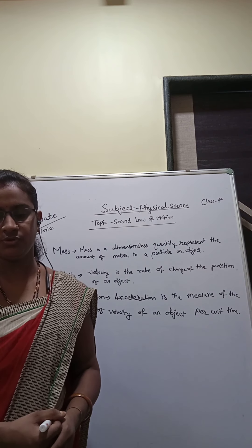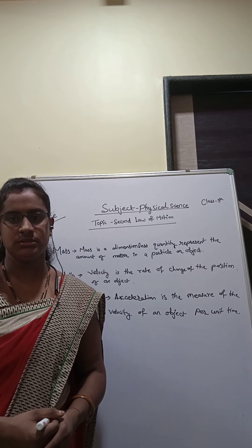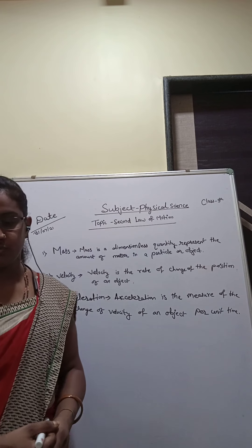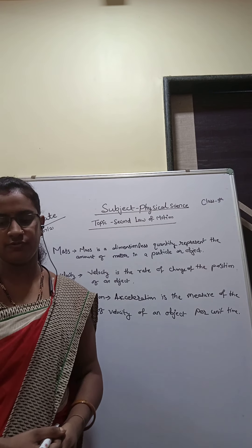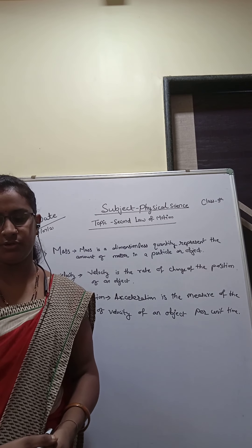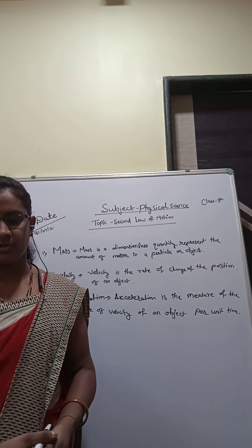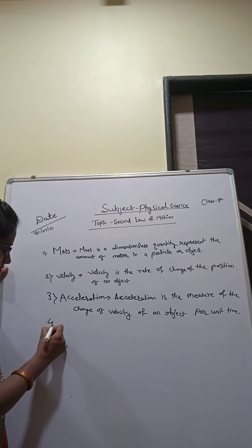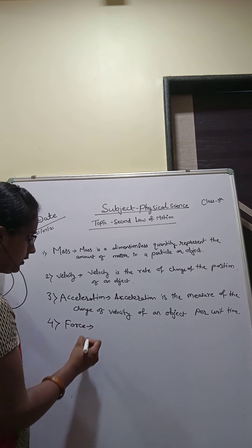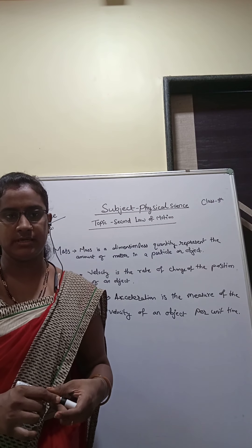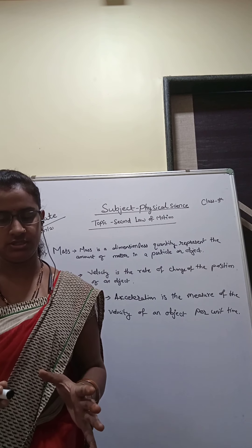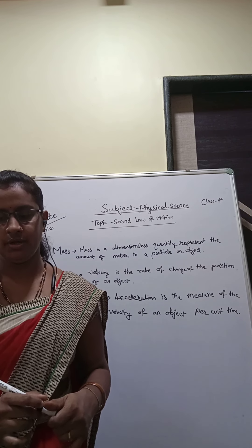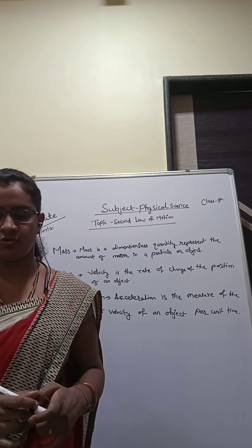Very good. When does a force come into play? When an interaction between two objects arises. Now tell me about some uses of force in real life. A force can be used to change the magnitude of velocity of an object, to change the direction of motion, or to change the shape or size of an object.